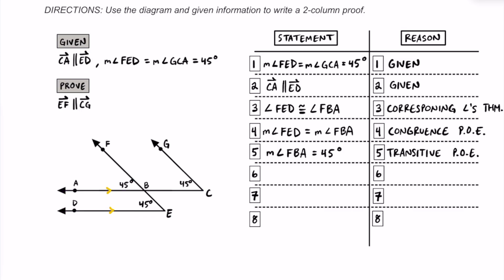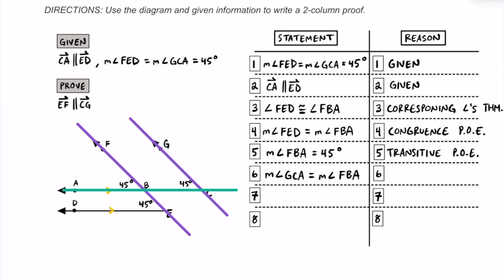Now remember, we're trying to prove that ray EF is parallel to ray CG — those are these two rays over here. If we extend them to make them a little more clear and focus in on ray CA, we can see that CA is actually a transversal for ray CG and EF. We were given that the measure of angle CGA was 45 degrees, and we established that the measure of angle FBA was also 45 degrees. So we can say that the measures of these two angles are equal to each other by the substitution property of equality. And if their angles are equal to each other, then we can say that these angles are congruent to each other by the congruence property of equality.